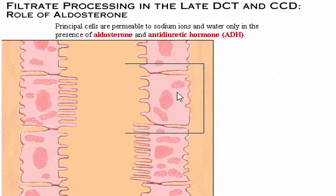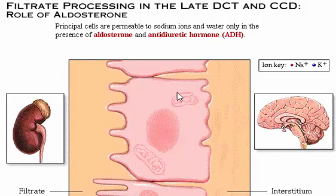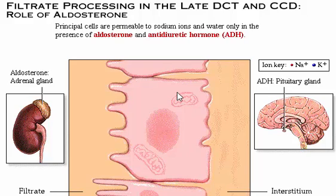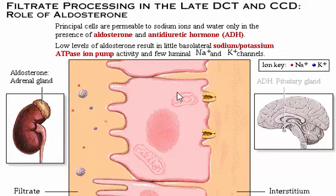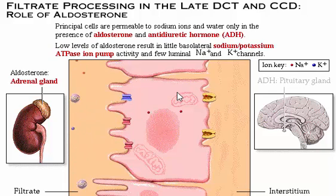The principal cells are permeable to sodium ions and water only in the presence of the hormones aldosterone from the adrenal gland and antidiuretic hormone, or ADH, from the posterior pituitary gland. Let's first look at the role of aldosterone, which precisely regulates the final amount of sodium reabsorbed. When levels of sodium and potassium ions in the blood are balanced, aldosterone levels remain low. As a result, there are few sodium-potassium ATPase ion pumps in the basolateral membrane and few sodium and potassium channels in the luminal membrane. Therefore, sodium ion reabsorption and potassium ion secretion are both low.